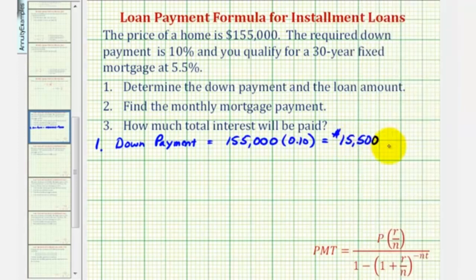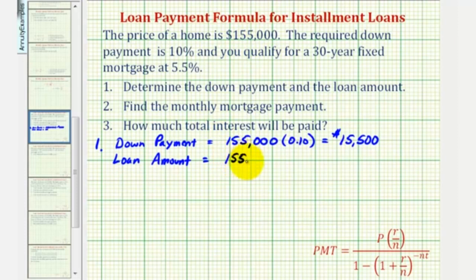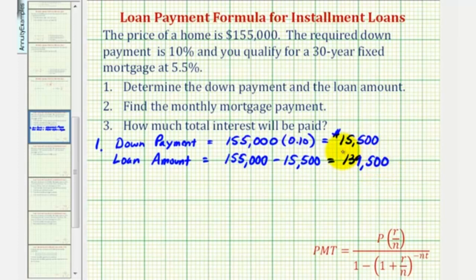So if this is the down payment, then the loan amount is equal to the price of the home, $155,000, minus the down payment. So this would give us $139,500. This would be the loan amount.